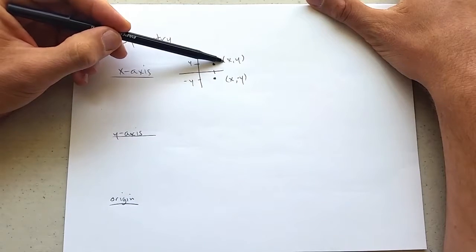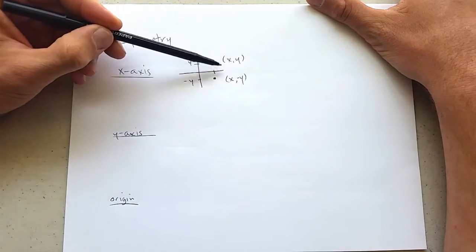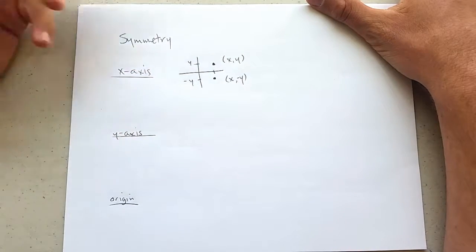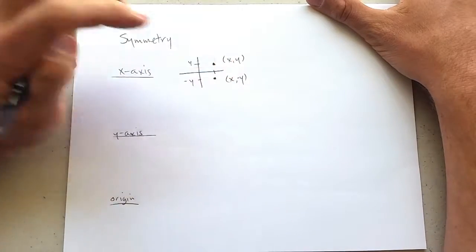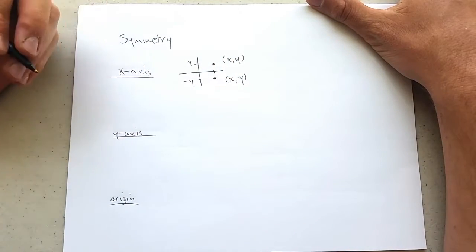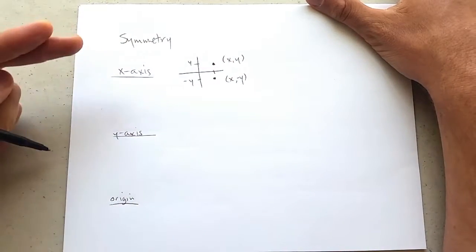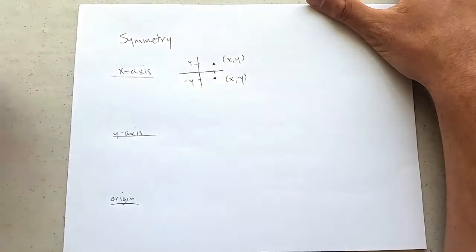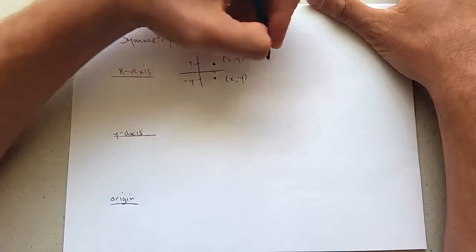So if you have the point (x,y), if you have x-axis symmetry, you'll also have the point (x,-y). It's a little bit strange that the y goes from positive to negative, not the x. So just like intercepts, your intuition is a little bit backwards here. So x-axis, you're going to replace y by negative y.